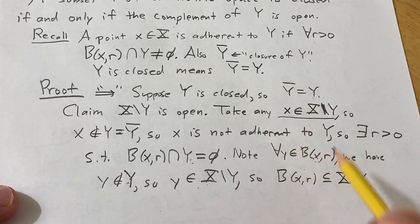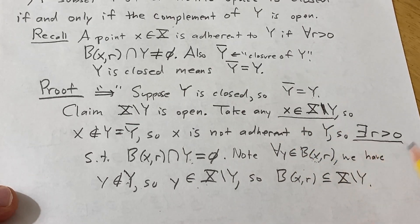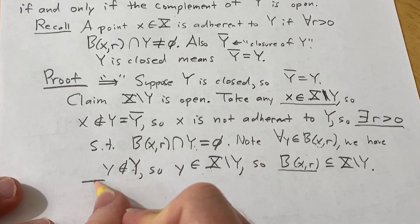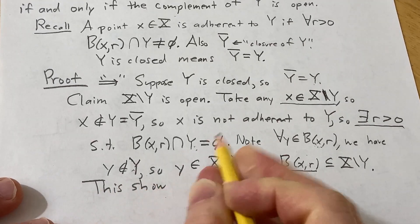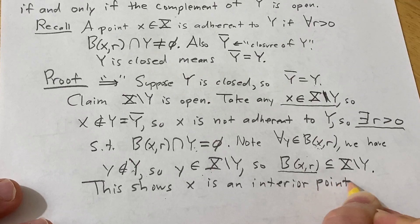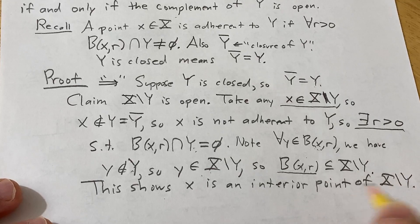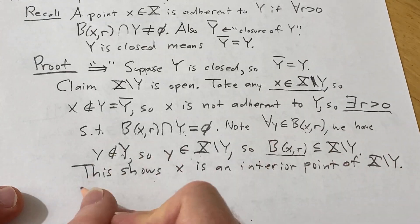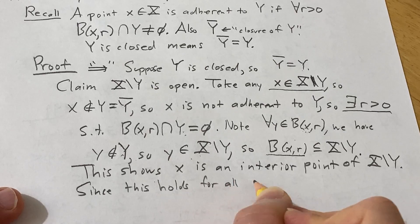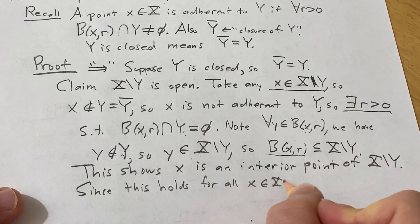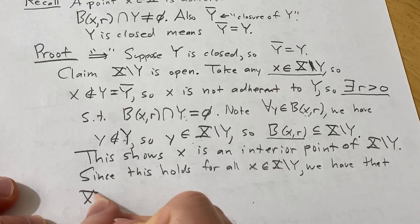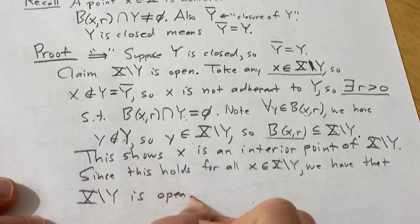We took an element in the complement, showed there exists R greater than zero such that the open ball centered at that element of radius R is contained entirely in the complement. This shows X is an interior point of X set minus Y. Since this holds for all X in the complement, X set minus Y is open.